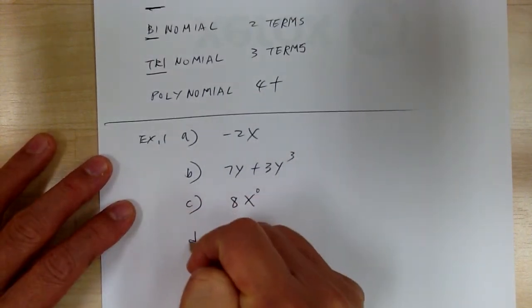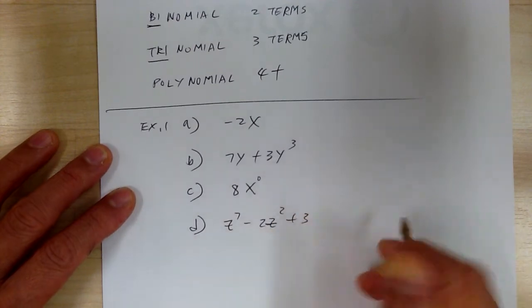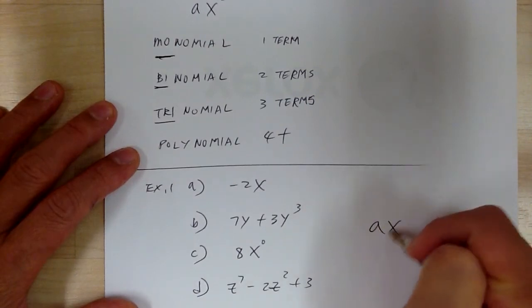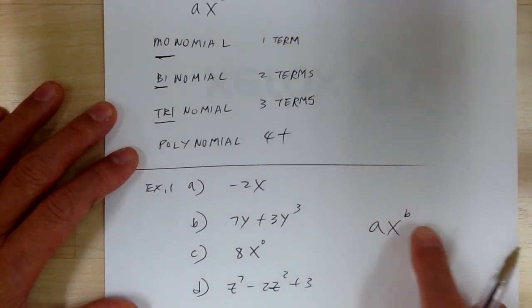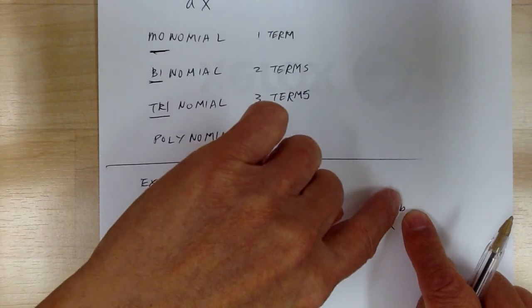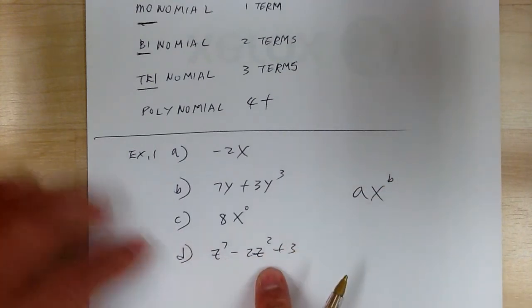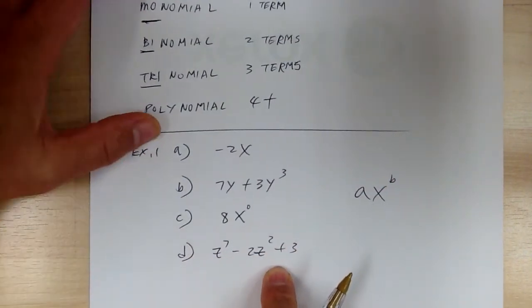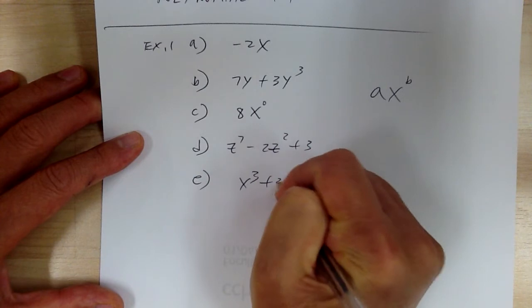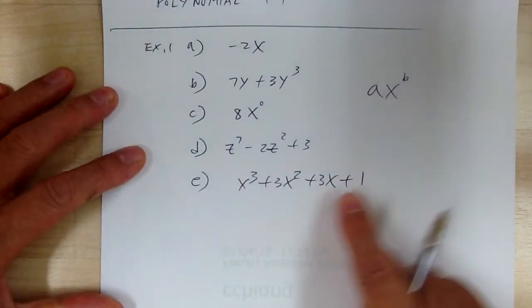D: you've got Z to the 7 minus 2Z squared plus 3. This all fits that format — AX to a positive number. The variable doesn't matter. It just basically means it's raised to a non-negative integer exponent. So this is an example of a trinomial. E: X³ plus 3X² plus 3X plus 1. Every one of these fits this format, so this is a polynomial.